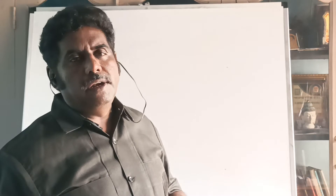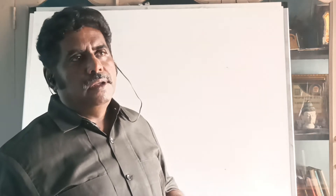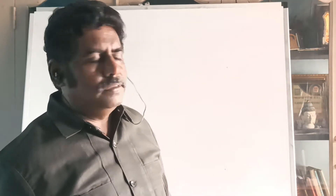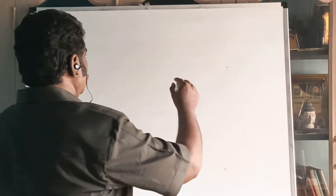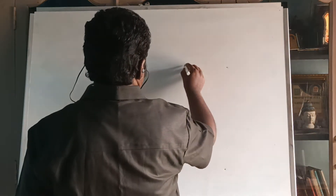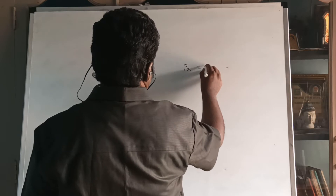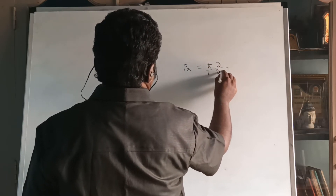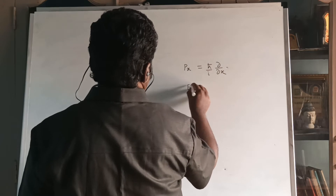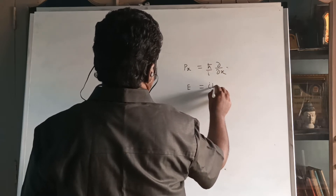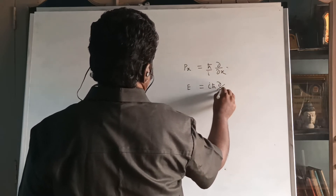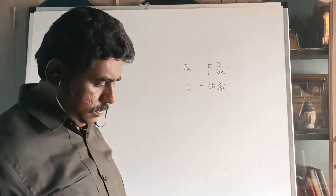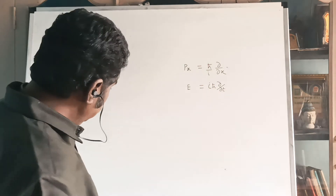Our question is: how do we get the momentum and energy operators? The x-component of momentum px = (ℏ/i)(∂/∂x), and the energy operator E = iℏ(∂/∂t). How do you get these operators? That is our question.